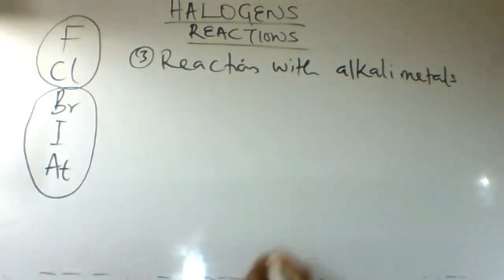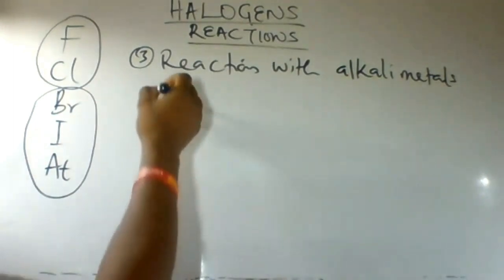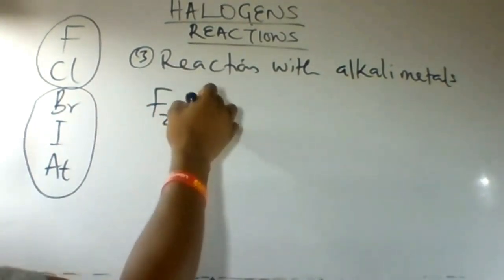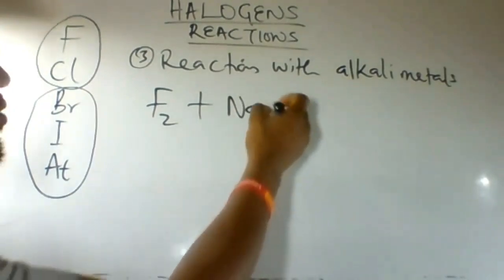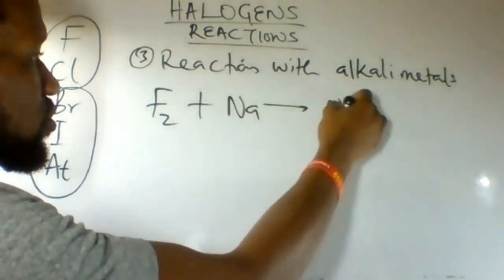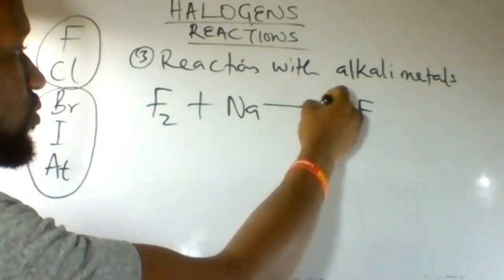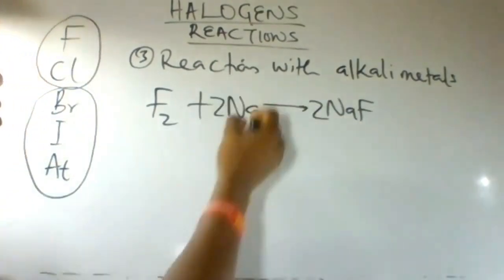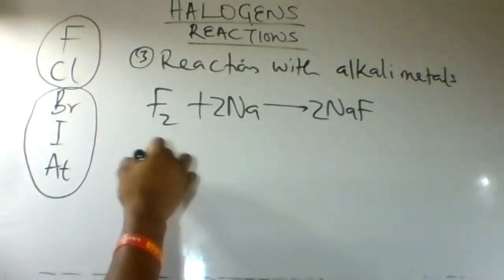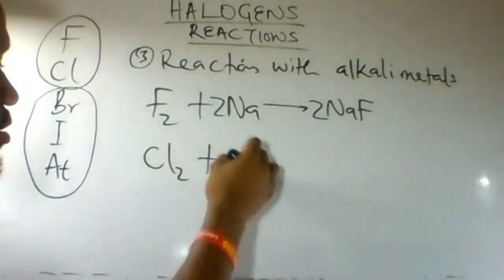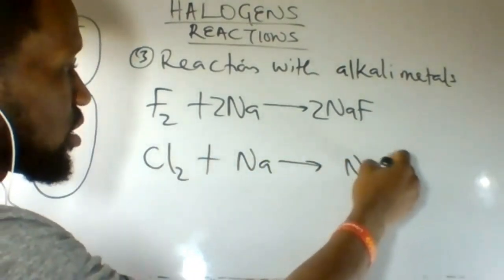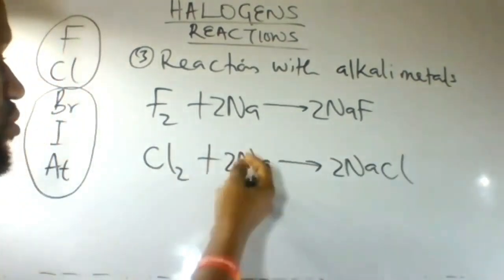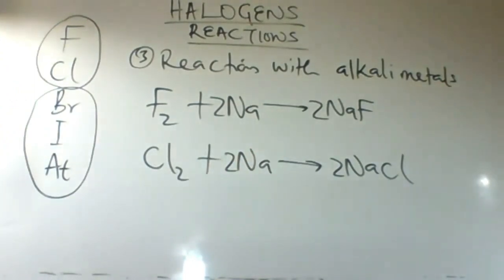Halogens also combine with metals to form salts. For example, sodium and fluorine gas form sodium fluoride. Similarly, chlorine and sodium form sodium chloride. So whenever halogens combine with metals — specifically group 1 metals — we form salts.